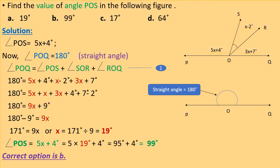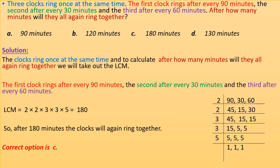Substituting into equation 1: 180° = (5x + 4°) + (x − 2°) + (3x + 7°). Collecting x terms: 5x + x + 3x = 9x, and constants: 4 + 7 − 2 = 9. So 180° = 9x + 9, giving 9x = 171, x = 19°. Substituting back: angle POS = 5(19) + 4 = 95 + 4 = 99°. The correct option is B.